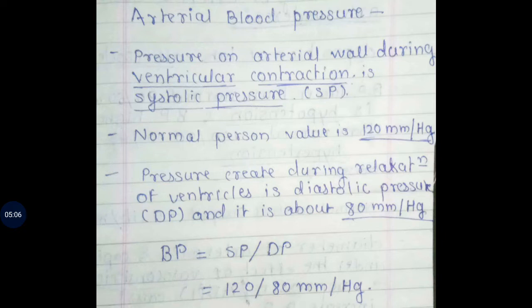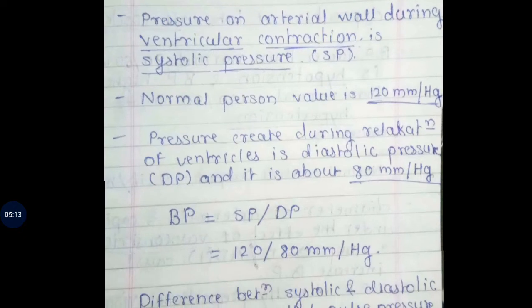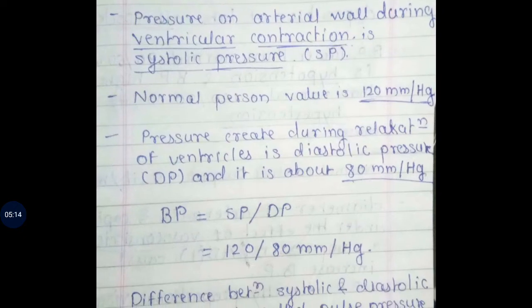Blood pressure consists of systolic pressure and diastolic pressure, and is written as 120/80 mmHg. That means systolic pressure is 120 and diastolic pressure is 80 mmHg.